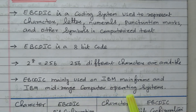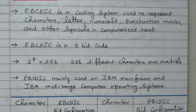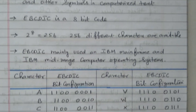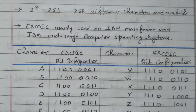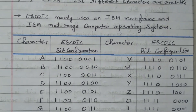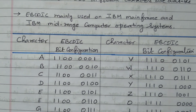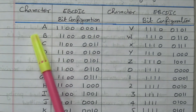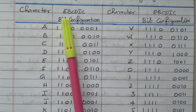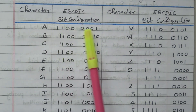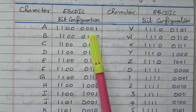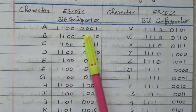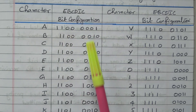Now we will see the alphabets and numbers — the EBCDIC code for small letters, capital alphabets, and the numerical system. For that, we will look at the tabular column. This is the EBCDIC 8-bit configuration. There are 8 bits available. In ASCII code there are 7 bits, but here we have 8 bits.